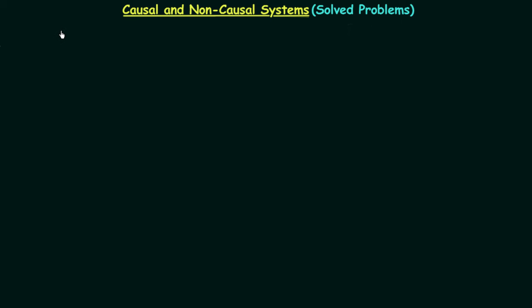In the last lecture I explained four problems based on causal and non-causal systems, and I also gave you three homework problems. Now in this lecture we will again solve four problems based on causal and non-causal systems, but this time the problems are only related to integration and differentiation.